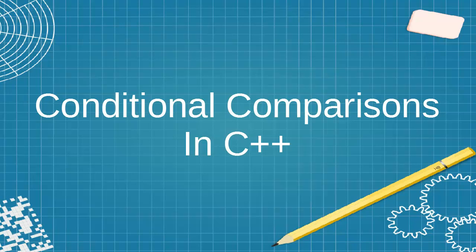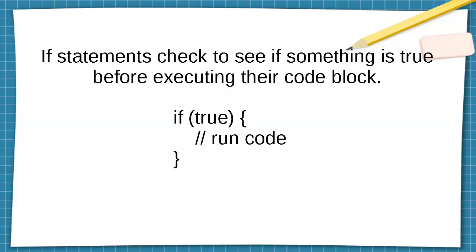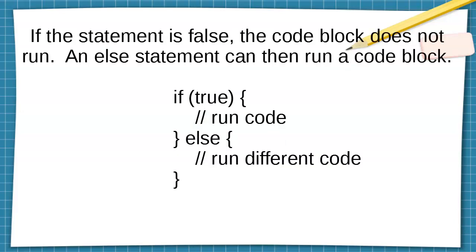In order to understand conditional execution of code, it's good to understand how you compare things to figure out if something is true or not. We have these conditional statements — if/else type statements. If statements check to see if something is true before executing their code. You can see this 'if true, run some code' type statement. If it's not true, you can do an else statement, so: if true run some code, else run some different code.